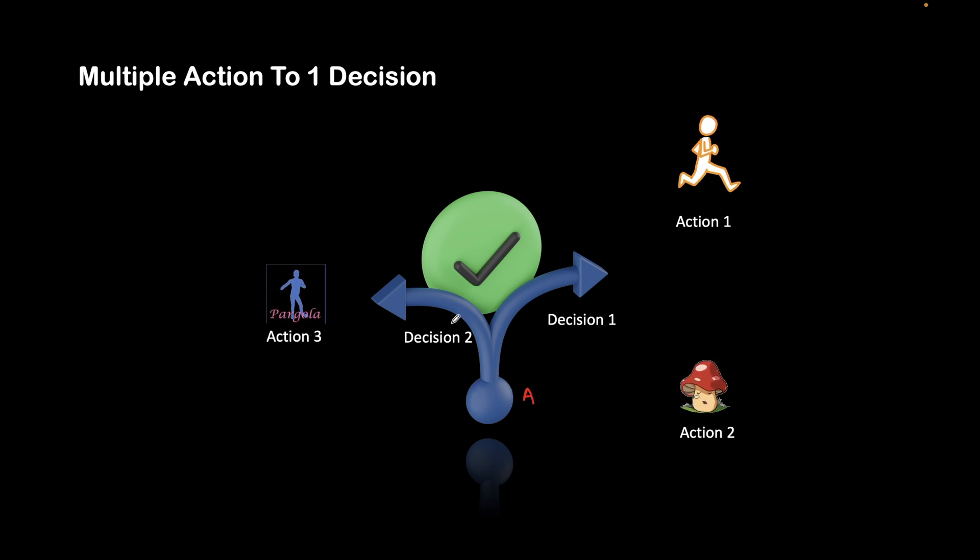Either he can take decision one or decision two. Based on the decisions he is taking, he needs to perform certain actions. If he takes decision one, he performs two actions. The first action is running, so he will go for a run.